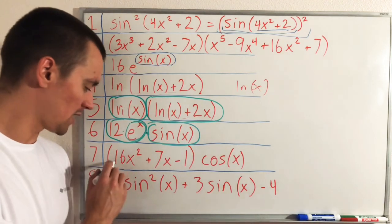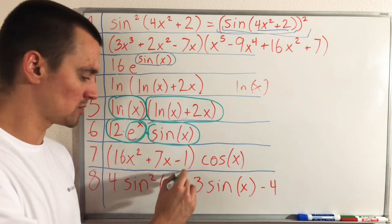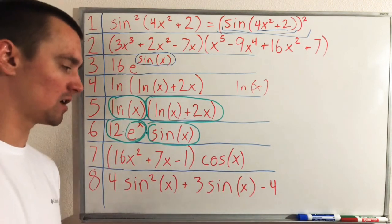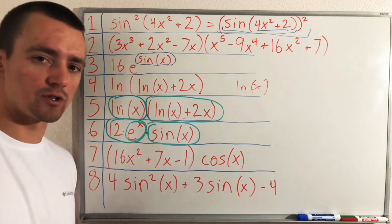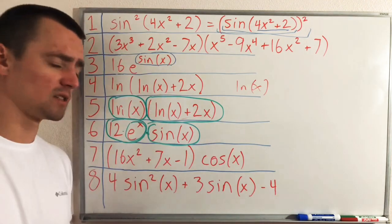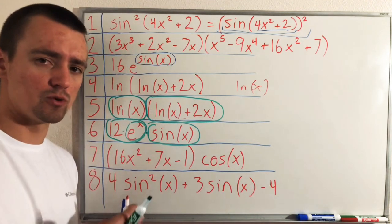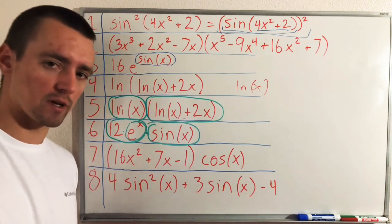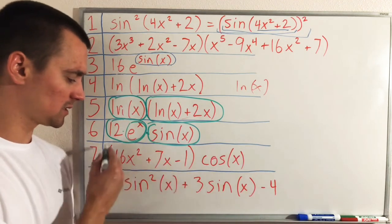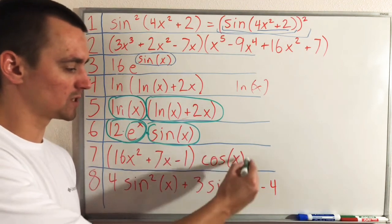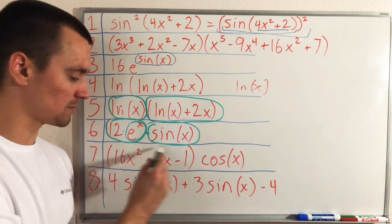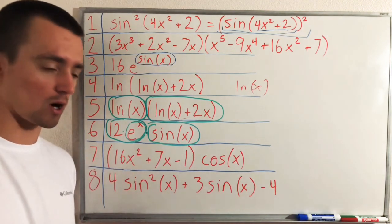Example seven: (16x² + 7x - 1) multiplied by cos(x). Again, we have a product — multiplication of two more complex functions. That's the key thing we're looking for: if two entire functions are being multiplied together, that's a strong hint to use the product rule. So we treat cos(x) as one function and 16x² + 7x - 1 as the other, and go forward with the product rule.